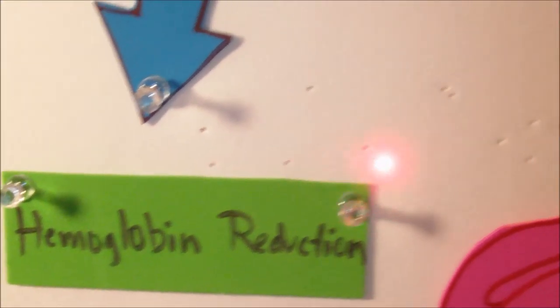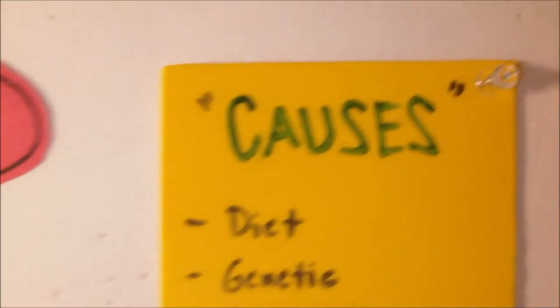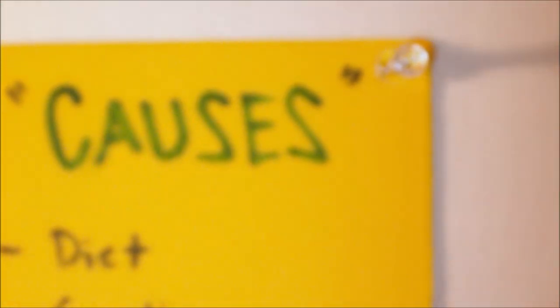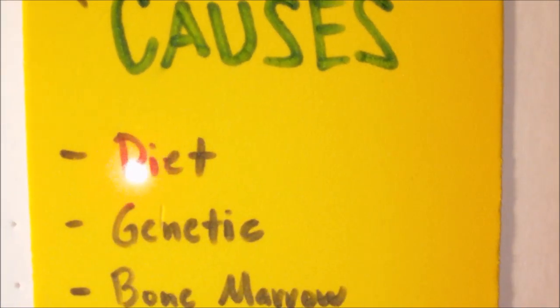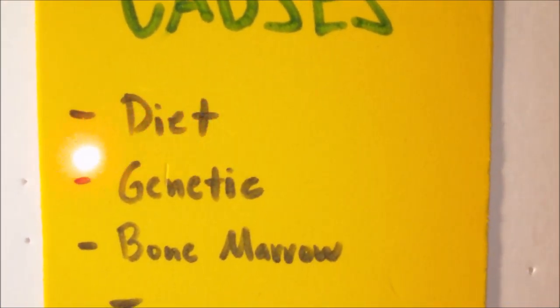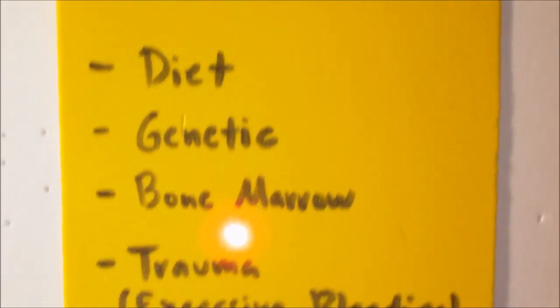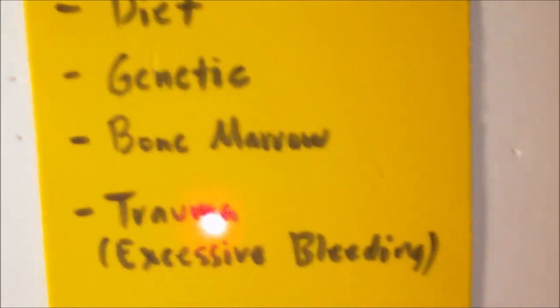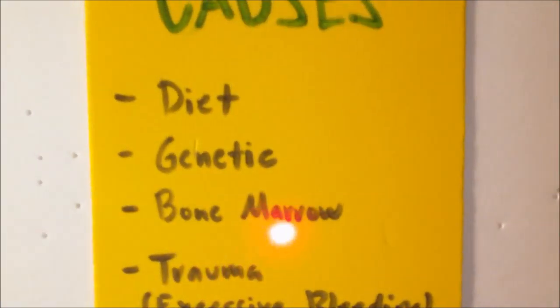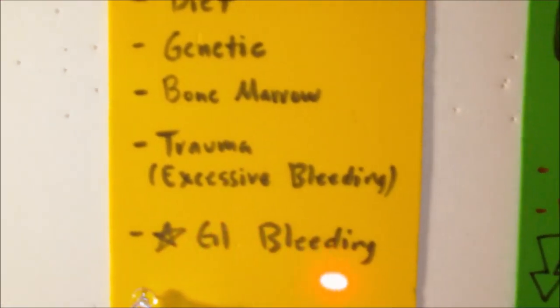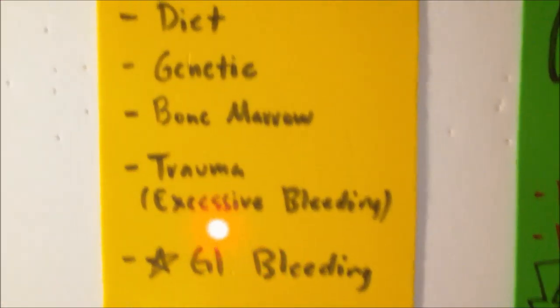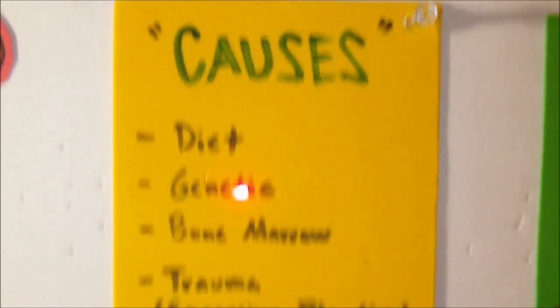What causes anemia? There are plenty of causes such as dietary problems, a genetic disorder, a bone marrow disease, or excessive bleeding. It could also be gastrointestinal bleeding, which is one of the most common reasons why it occurs in adults.